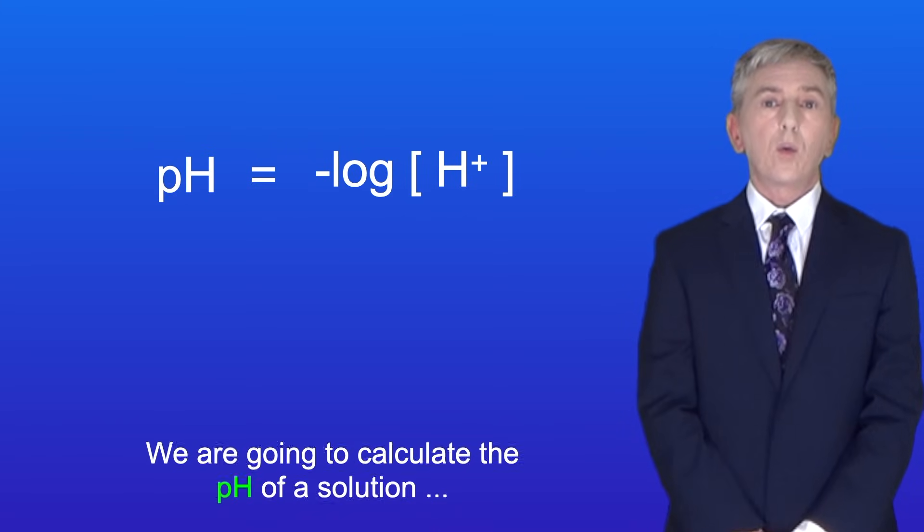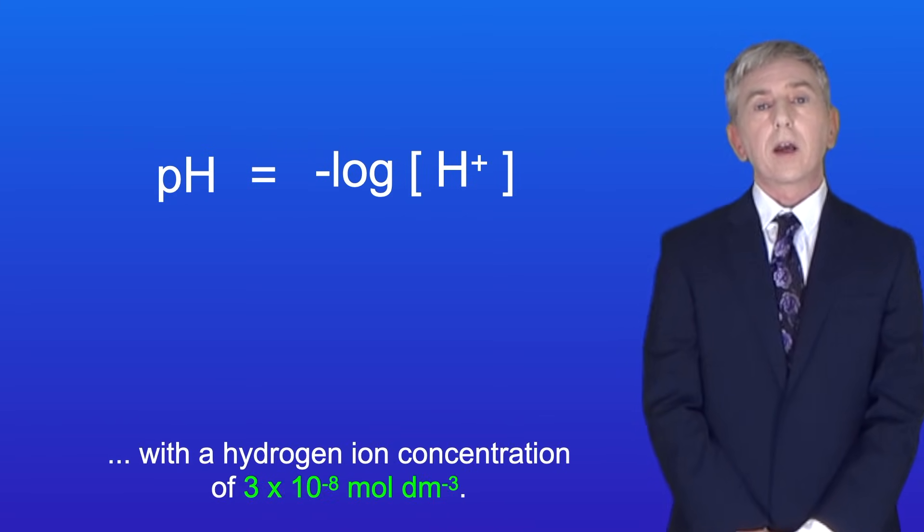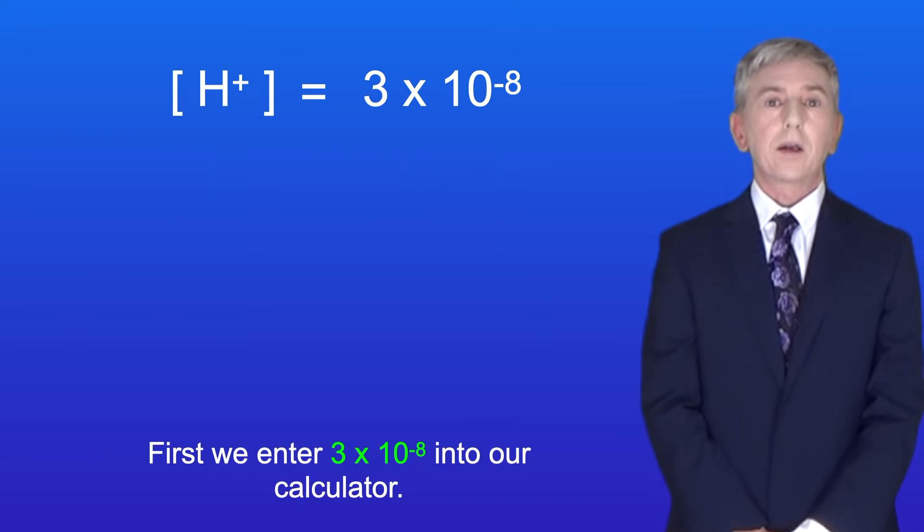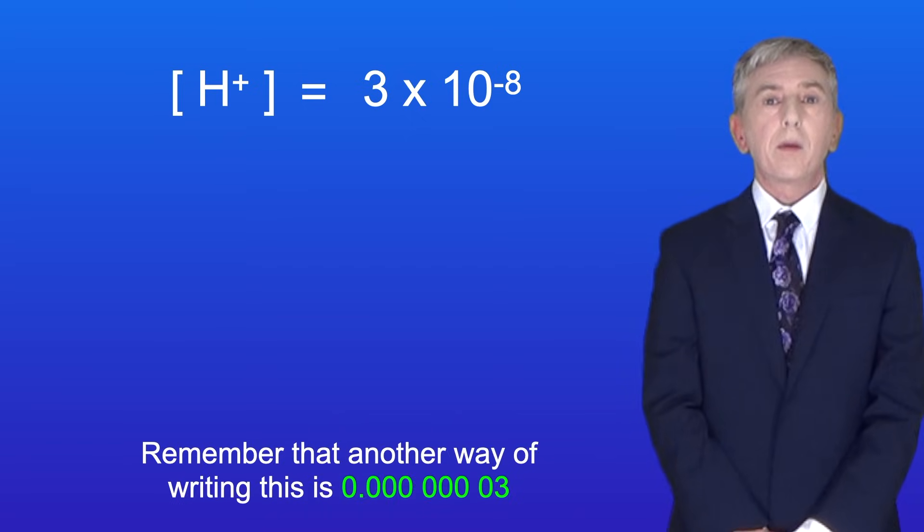Here's an example. We're going to calculate the pH of a solution with a hydrogen ion concentration of 3 times 10 to the power of minus 8 moles per decimetre cubed. First, we enter 3 times 10 to the power of minus 8 into our calculator. Remember that another way of writing this is 0.0000003.